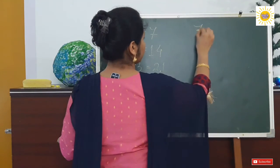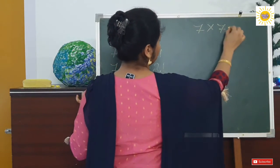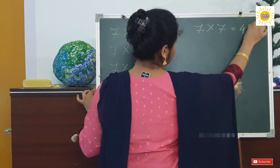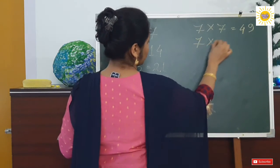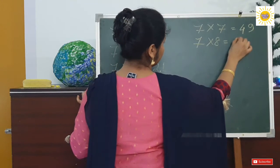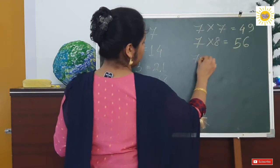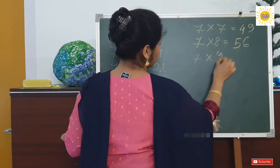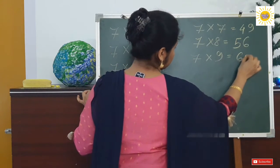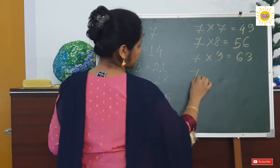7 into 7 equals to 49. 7 into 8 equals to 56. 7 into 9 equals to 63, and 7 into 10 equals to 70.